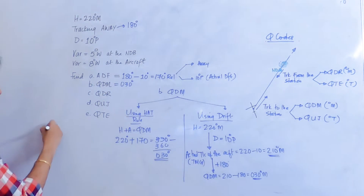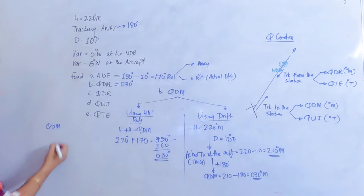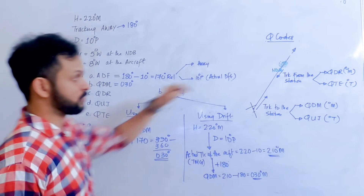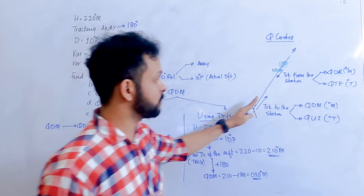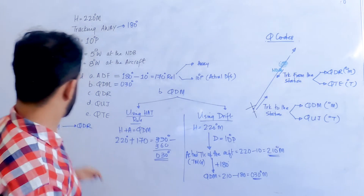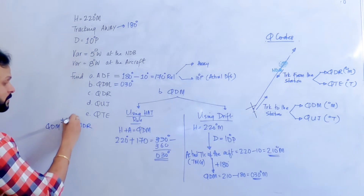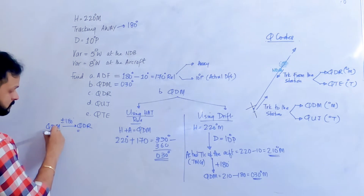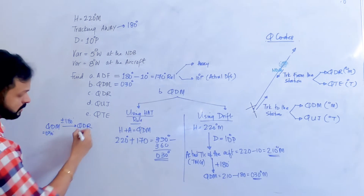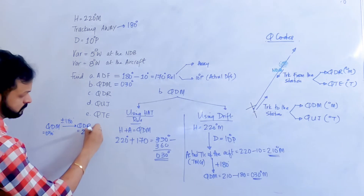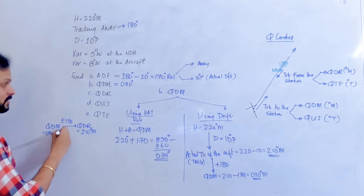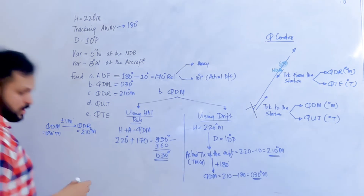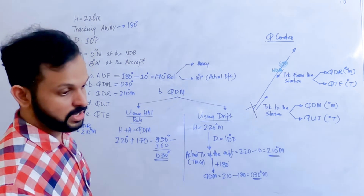Now, from the flowchart: if you have QDM, how do you find QDR? QDR is the magnetic track from the station. QDM and QDR are connected by 180 degrees. Therefore QDR equals 030 plus 180, which is 210 degrees magnetic.